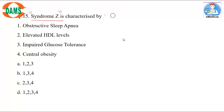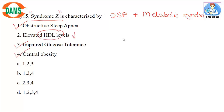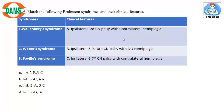Question 15: Syndrome Z is characterized by obstructive sleep apnea plus metabolic syndrome. Features include obstructive sleep apnea, impaired glucose tolerance, and central obesity — all true. HDL is good cholesterol; it should be reduced in this syndrome. So the correct answer is characterized by options 1, 3, and 4.